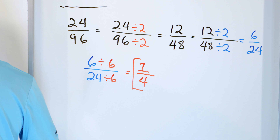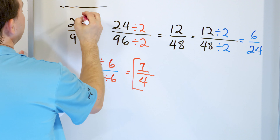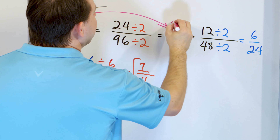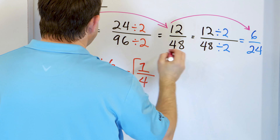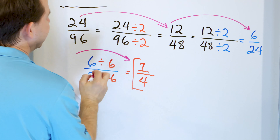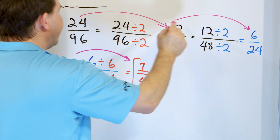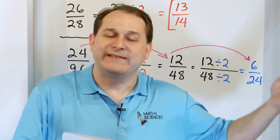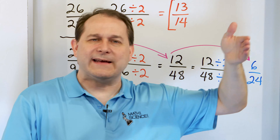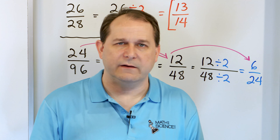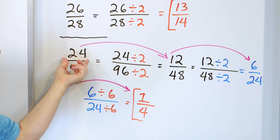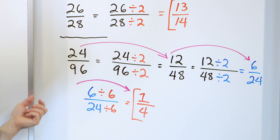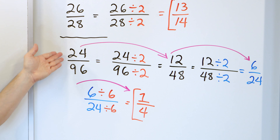Notice that we had a multi-step process here: we divided once to get twelve forty-eighths, divided again to get six twenty-fourths, then divided once more to get one-fourth. So when you have multiple steps to simplify a fraction, all it means is there was a larger number you could have divided top and bottom by to get the same thing in fewer steps.